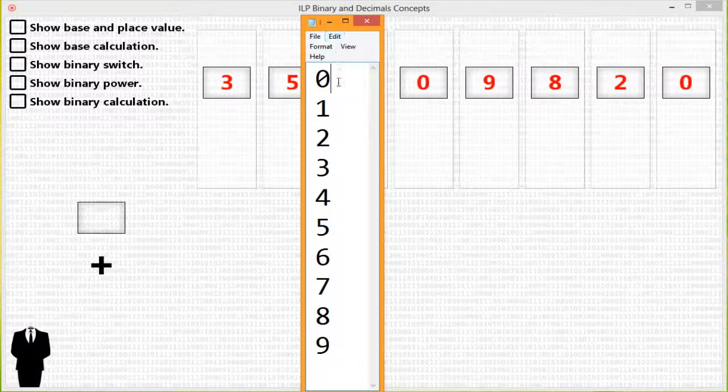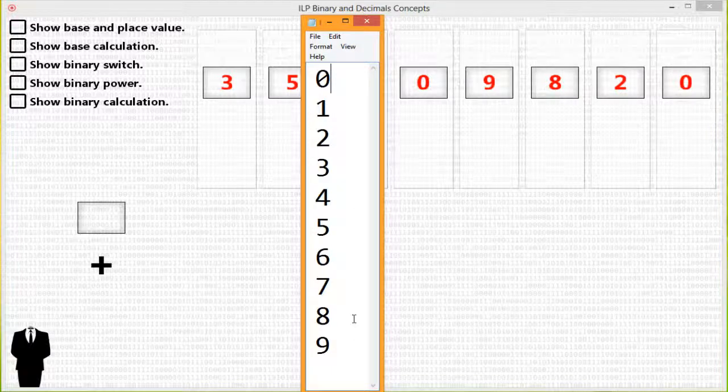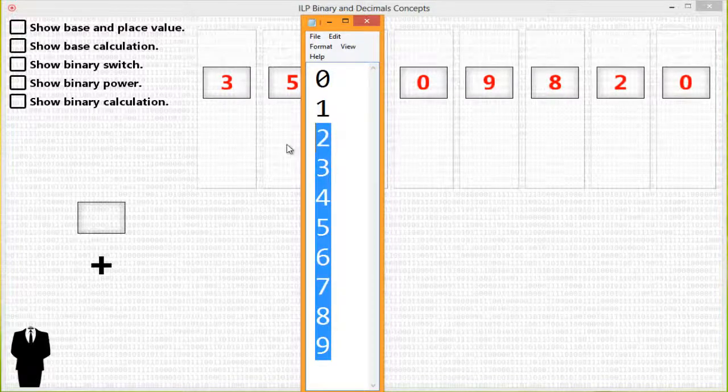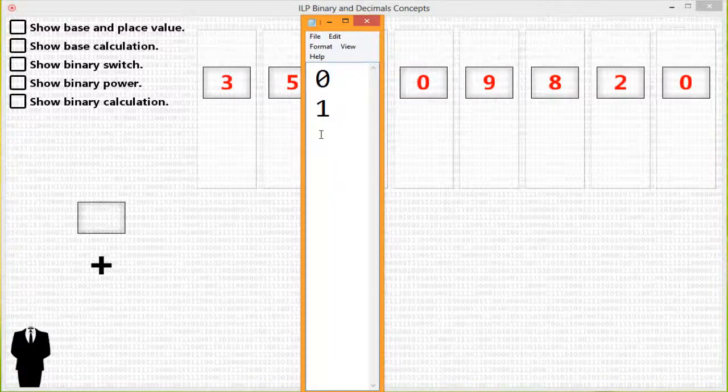In the decimal system, there are 10 symbols, 0 to 9, to represent quantity. Binary means 2, so in such a system there are only 2 symbols. You have 0 and 1 to represent something.